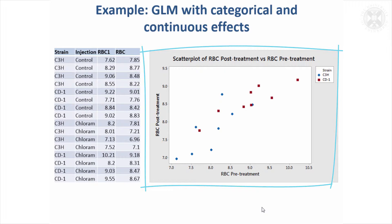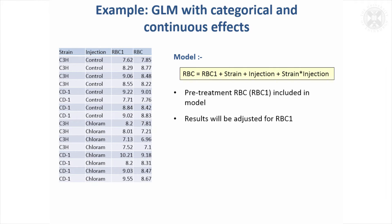We can take this into account by adjusting for the pretreatment value in the model using a general linear model. The key thing is that whereas strain and injection are categories, this red blood cell count before treatment is actually a measurement — not a category — but we can still put it into the model. This is the model we had before with the interaction, and now we've added pretreatment red blood cell counts as a continuous measurement.